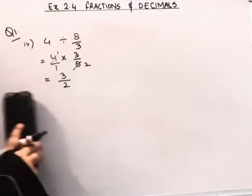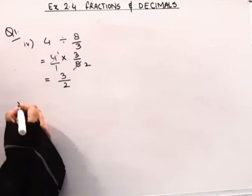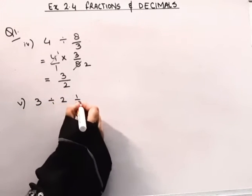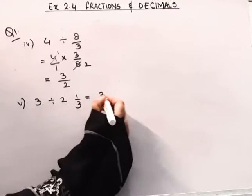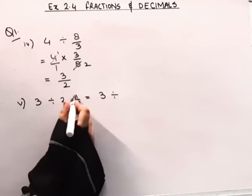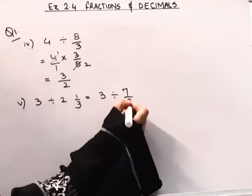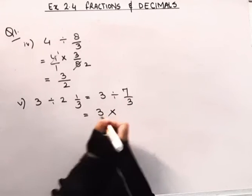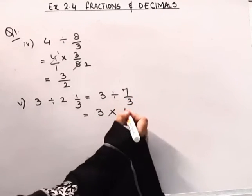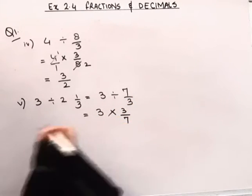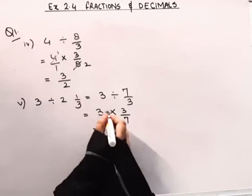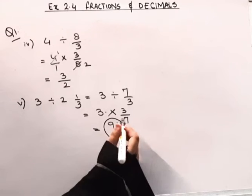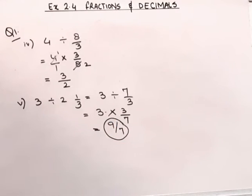Coming to the 5th part: 3 divided by 2 and 1 by 3. This is a mixed fraction — 3 twos are 6, plus 1 is 7 by 3. Division will change to multiplication and the reciprocal is 3 by 7. 3 threes are 9 divided by 7. So the answer for the 5th part is 9 by 7.